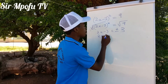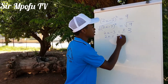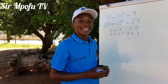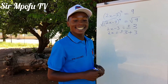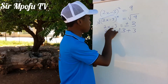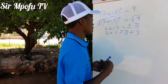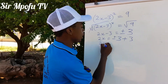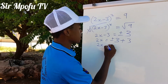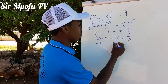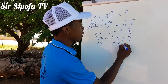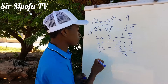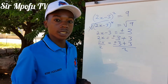Now it will be 2x equals plus or minus 3 plus 3. Remember: change side, change sign. So when this 3 goes to the other side, it becomes positive. So it will be 2x equals plus or minus 3 plus 3, divided by 2 — that's how we remove this 2.